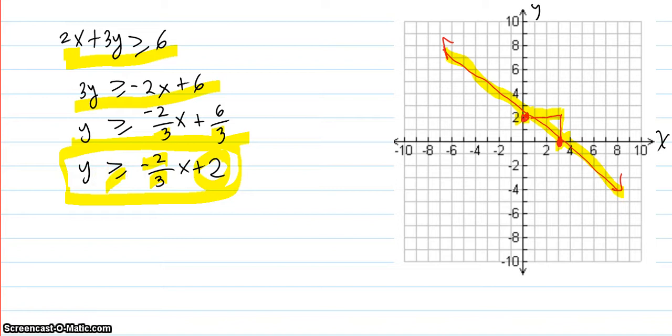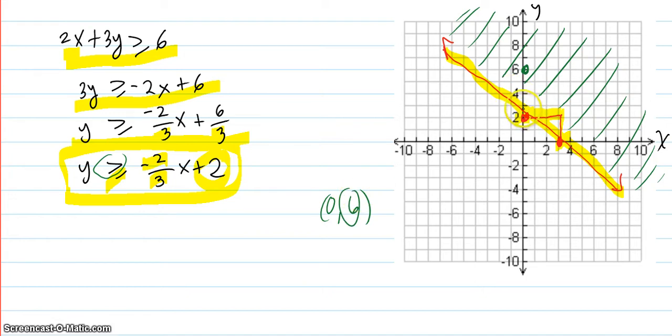So then we just have to figure out which side to shade. So we want the y values to be greater than the ones on the line, so we want these. And this is a test. Let's say you pick this one here: 0, 6. This is the y value of 6, definitely greater than the one on the line, which is here. 6 is greater than 2, so it checks out. All these points over here have y values that are greater than the ones on the line.